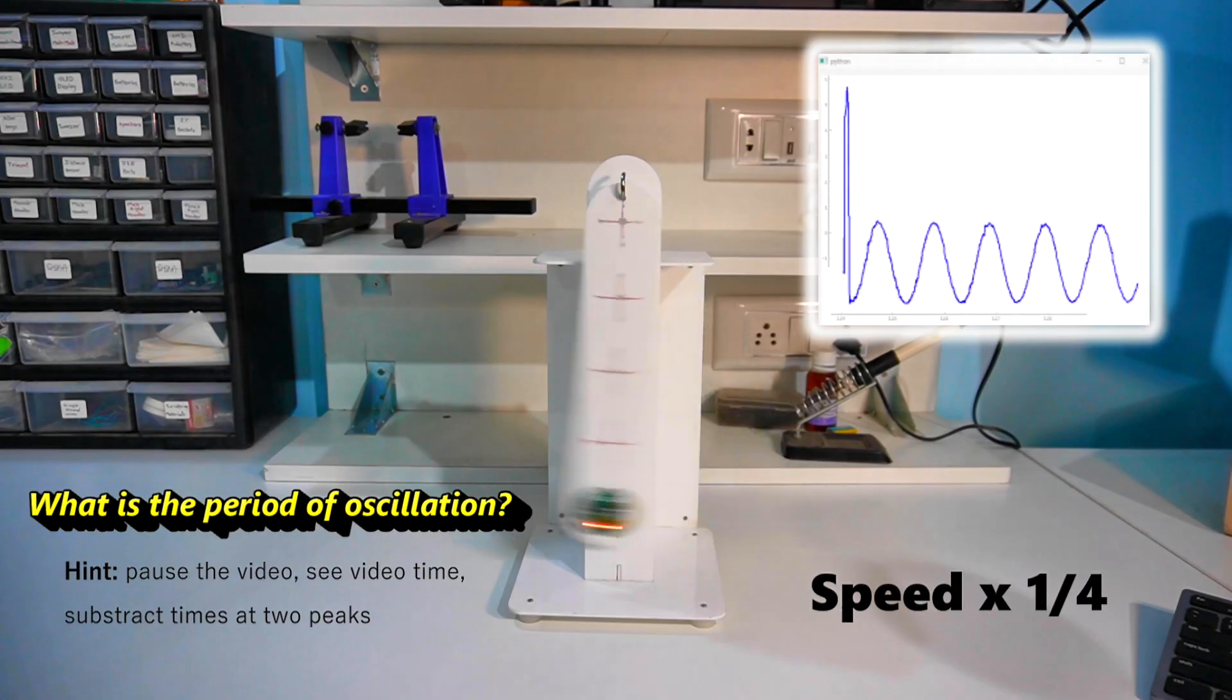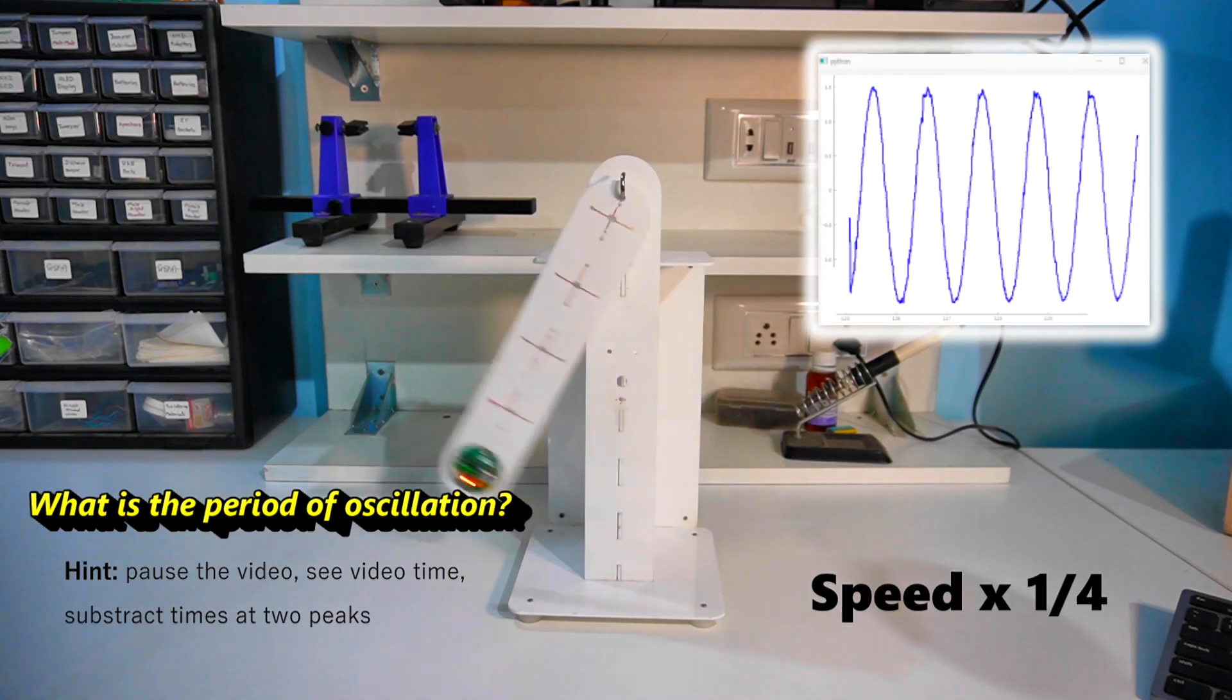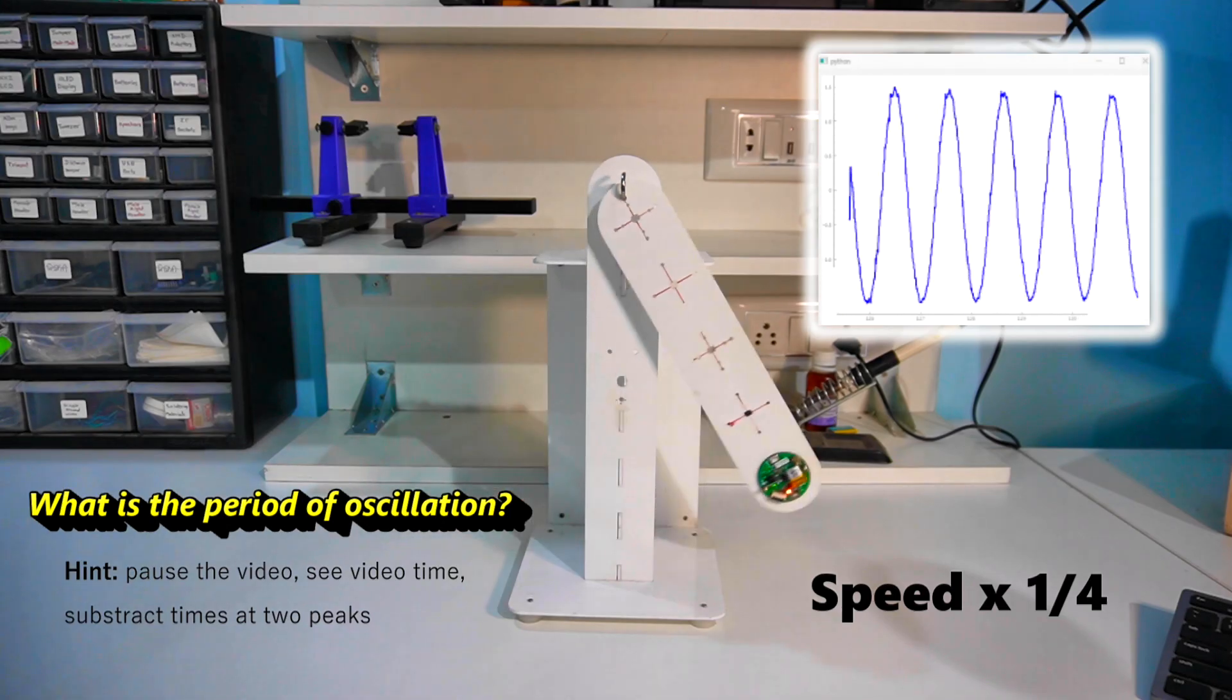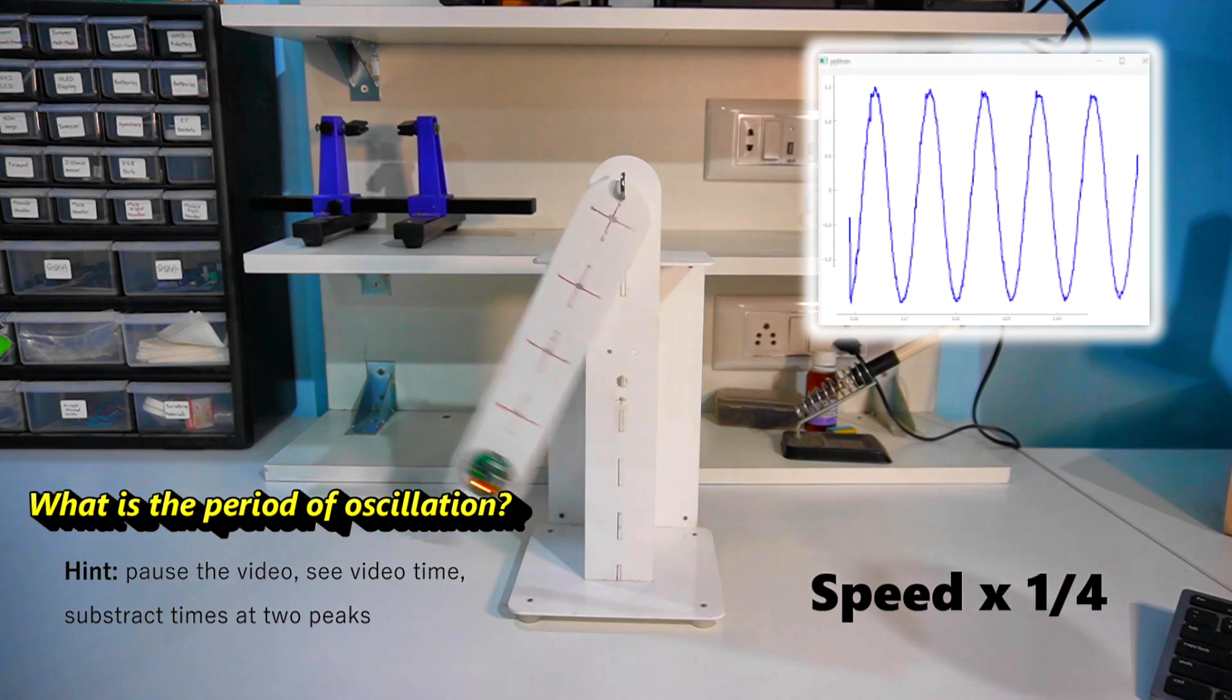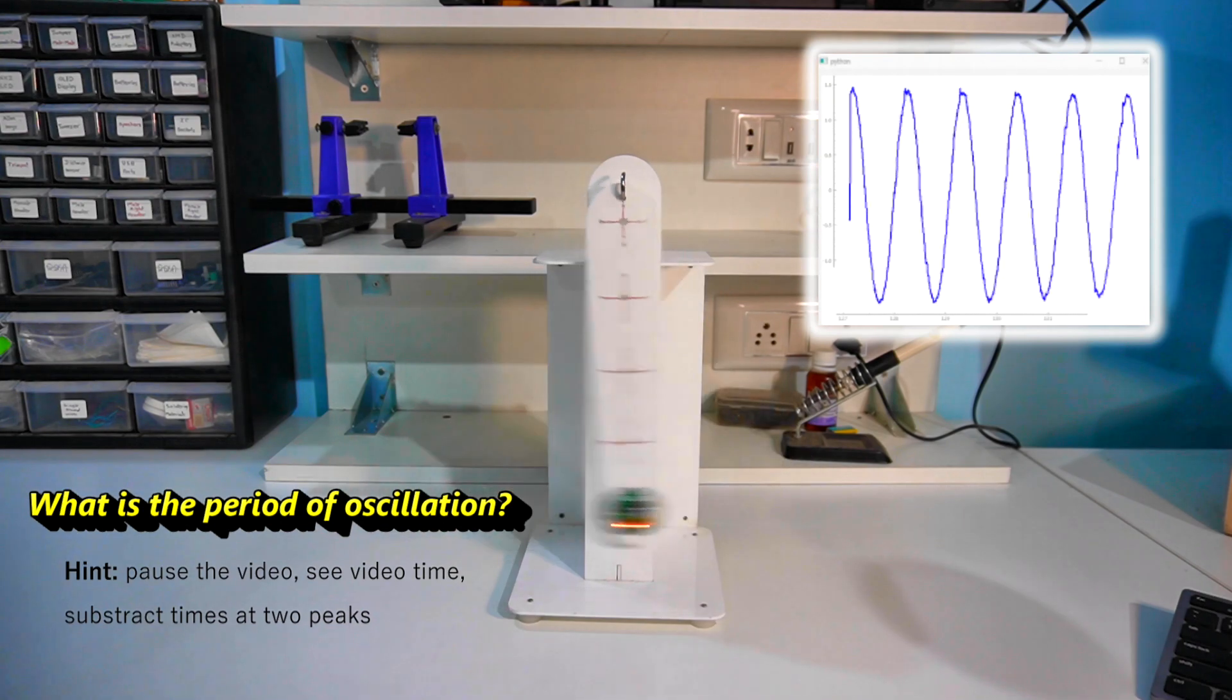The video is now in slow motion, playing at 4 times slower speed. You can pause it at different points and measure the time period of oscillation. Let me know in the comments below what period you came up with. And that's a demonstration of simple harmonic motion.